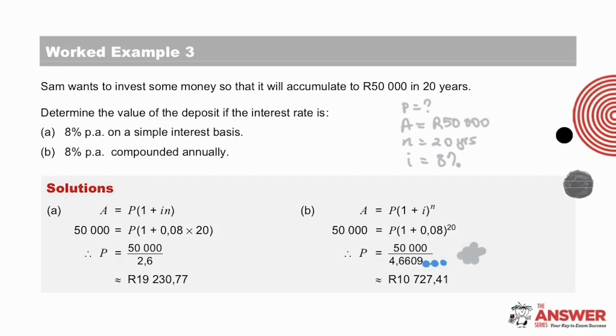Whichever method you choose, it is useful to check the display screen of your calculator as you go to make sure the information you've entered is correct. Let's pause for a moment and think, what should Sam do here if he had a choice? If you look at this answer, compared to that answer, he would surely much prefer to deposit 10,000 and something rand to have 50,000 in 20 years time, rather than almost 20,000, which is double the 10,000.